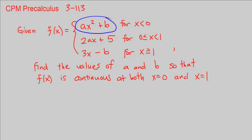The first piece is ax squared plus b for x is less than 0. So remember if this is our x and y axis, this piece is just to the left of the y axis.